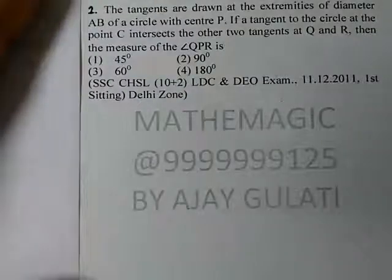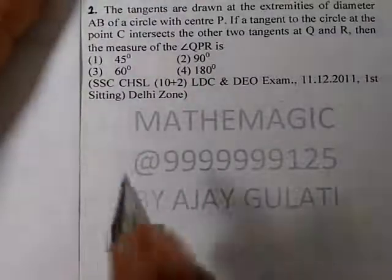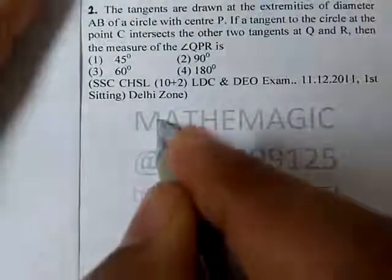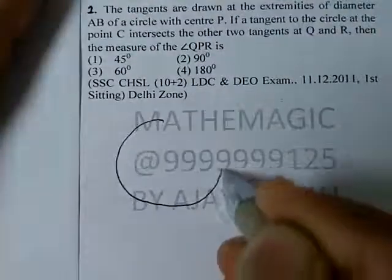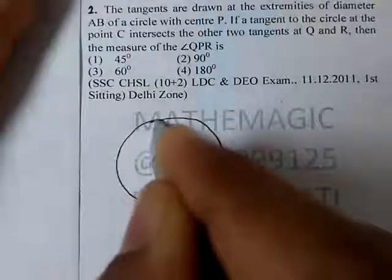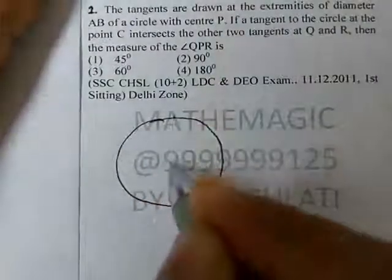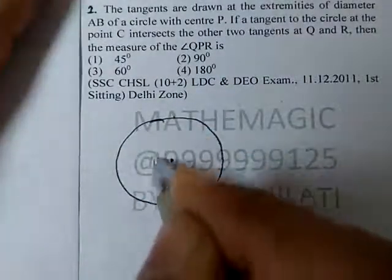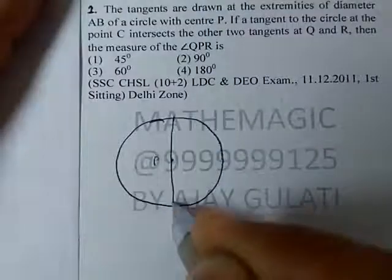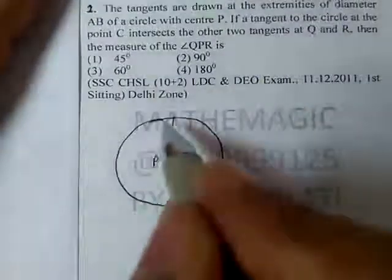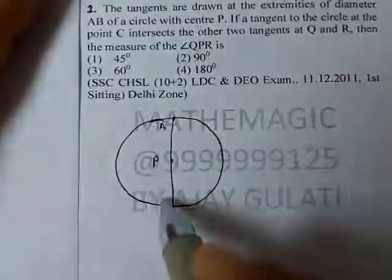The tangents are drawn at the extremities of a diameter AB of a circle with center P. Here is a circle. The center is P. Now we have A and B, the diameter.